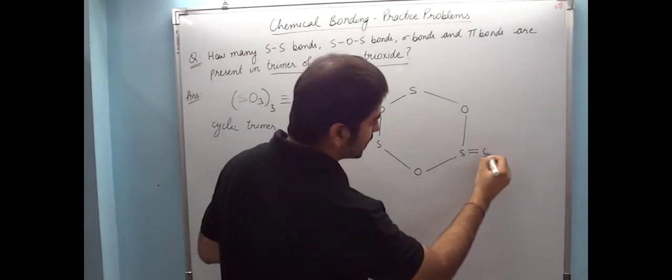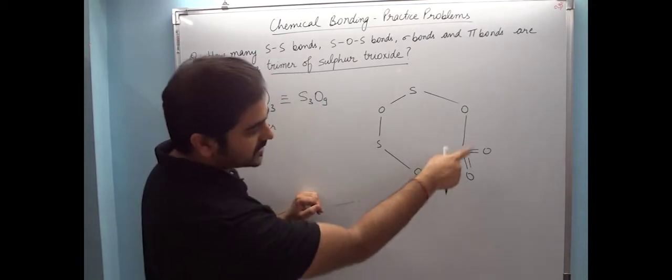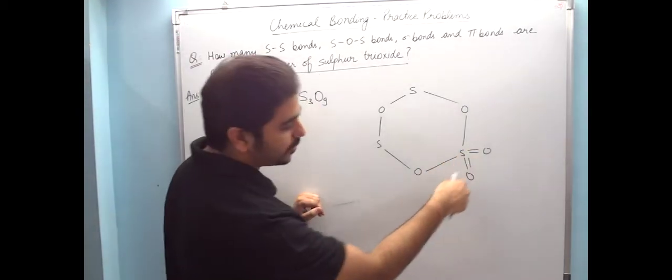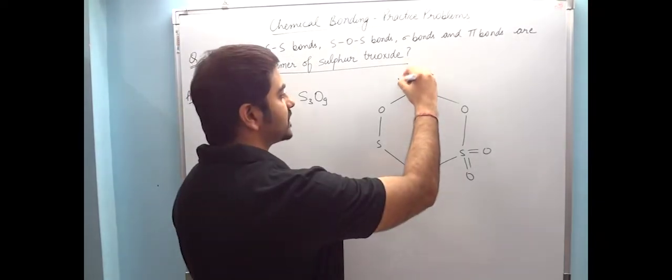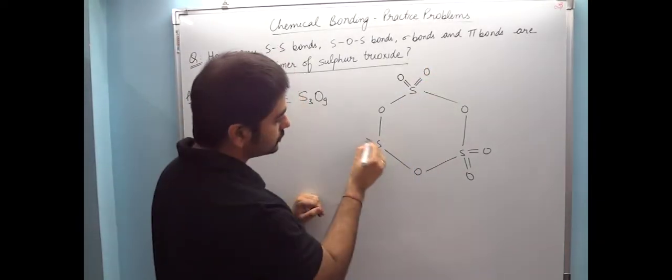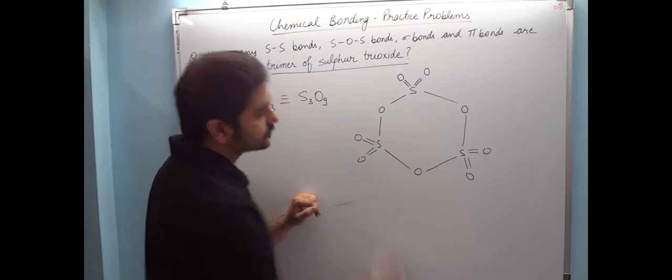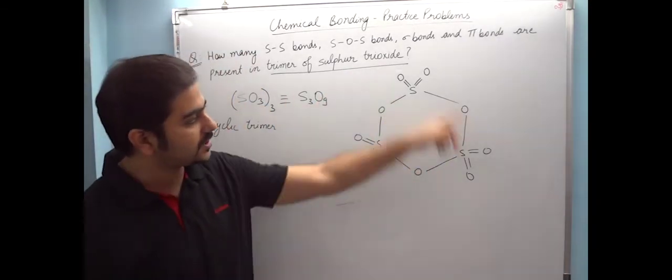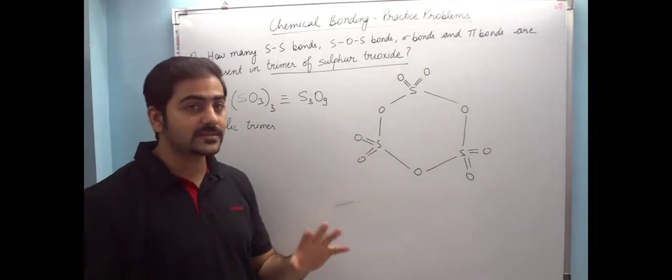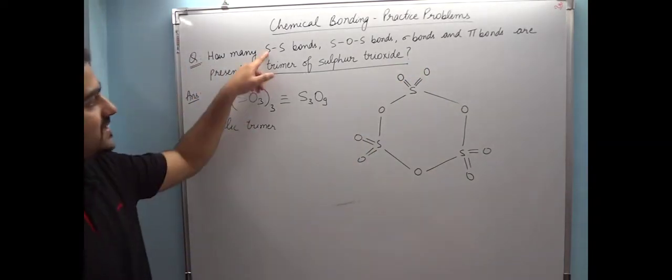But since sulfur has vacant 3d orbitals, it can expand and make maximum 6 bonds. So then this is how we have to increase. So now the line of 2 bonds, now this is when the 3 bonds are there and the same for 2 bonds. So now this is the 3 bonds.